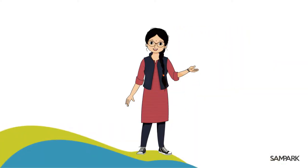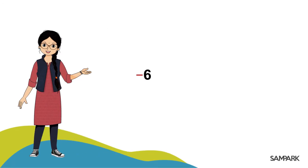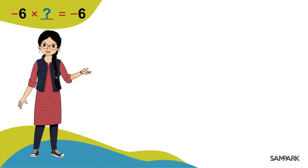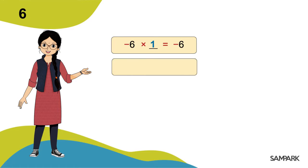बच्चों, क्या कोई ऐसा पूनांक गुनांक के लिए भी है? जैसे माइनस चार को किस पूनांक से गुना करने पर गुनन फल माइनस चार मिलता है? हाँ! माइनस चार गुना एक हुआ माइनस चार।